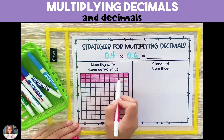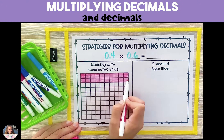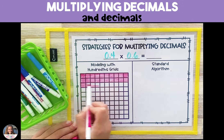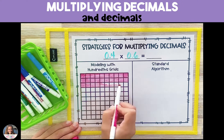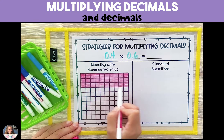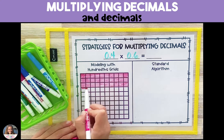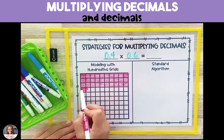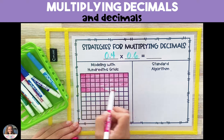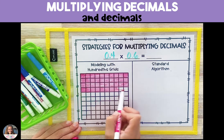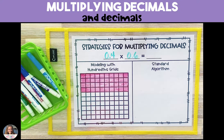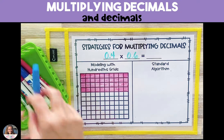To show four tenths we're going to shade in four of the ten rows. One way to think of this problem is that we are taking six tenths of four tenths, because 'of' means multiply. In order to do that we have to show the four tenths first.